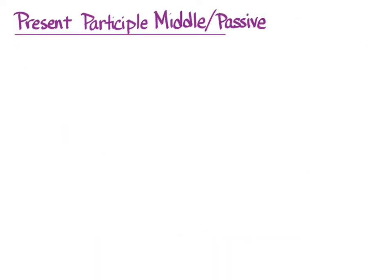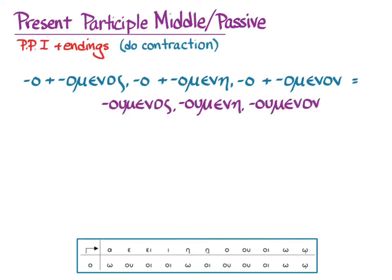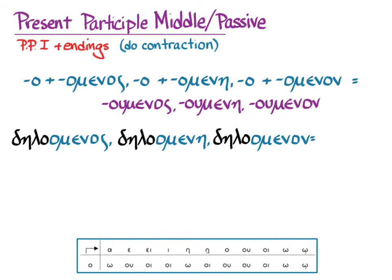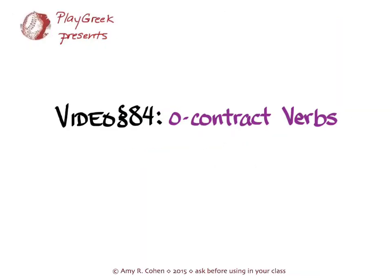The present participle middle/passive is simpler. First principal part and endings: omicron plus oumenos, oumenē, or oumenon — which means oumenos, oumenē, oumenon. With our verb, we do the contraction and get dēloumenos, dēloumenē, dēloumenon. Recessive accent with contraction rules will end up there. That's a brief but hopefully thorough treatment of omicron contract verbs, which you ought to be able to handle now when you run into them.